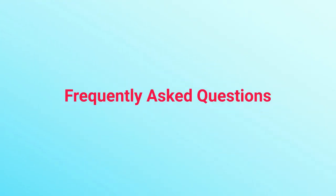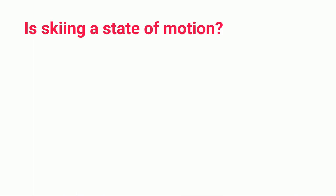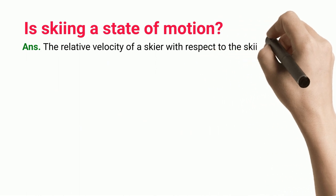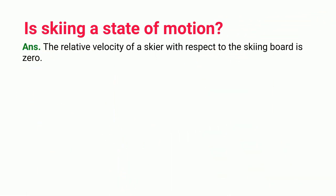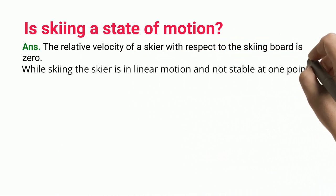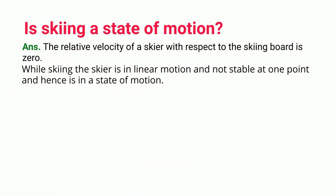Frequently asked questions. Is skiing a state of motion? The relative velocity of a skier with respect to the skiing board is zero. While skiing, the skier is in linear motion and not stable at one point, and hence is in a state of motion.